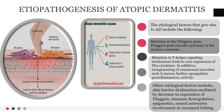Etiopathogenesis of atopic dermatitis. The etiologic component of AD is rather multifactorial and complex. Etiological factors that give rise to AD include: mutation in the filaggrin gene, which encodes proteins in the stratum corneum; mutation in T helper signaling mechanism leading to over-expression of T2 cytokines; and re-colonization of commensal microbes such as S. aureus, which further upregulates pro-inflammatory activity.